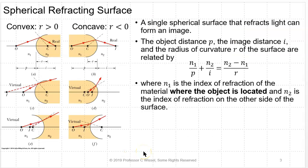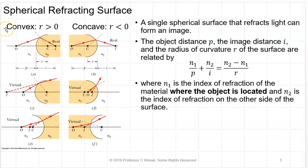All lenses are formed from spherical refracting surfaces. A single spherical surface that refracts light can form an image. The object distance is P, the image distance is I, and the radius of curvature R over the surface are related by N1 over P plus N2 over I equals N2 minus N1 over R. N1 is the index of refraction of the material where the object is located, and N2 is the index of refraction on the other side of the surface. Here are the spherical surfaces and the sign convention for this.